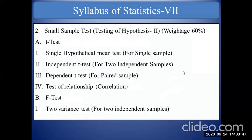The first topic in Unit two is the t-test. In SYBCom we saw large sample tests. When sample size is more than 30, it is considered a large sample test. But when your sample size is 30 or less than 30, we cannot use large sample test, because large samples always follow normal distribution. When the sample size is small, it does not follow normal distribution; instead it follows a different type of probability distribution called the t-distribution, also known as Student's t-distribution.